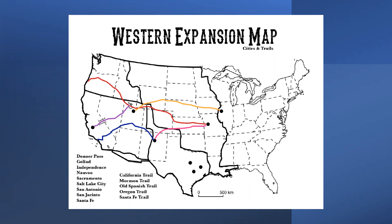Many who went to California — those attracted to the promise of gold and the gold rush — were single men willing to take their chances in a boom economy that could go bust. We can see the various trails making their way to the West: the California Trail, the Mormon Trail, the Old Spanish Trail, the Oregon Trail, and the Santa Fe Trail. The 1840s witnessed the par excellence years of frontier advancement.